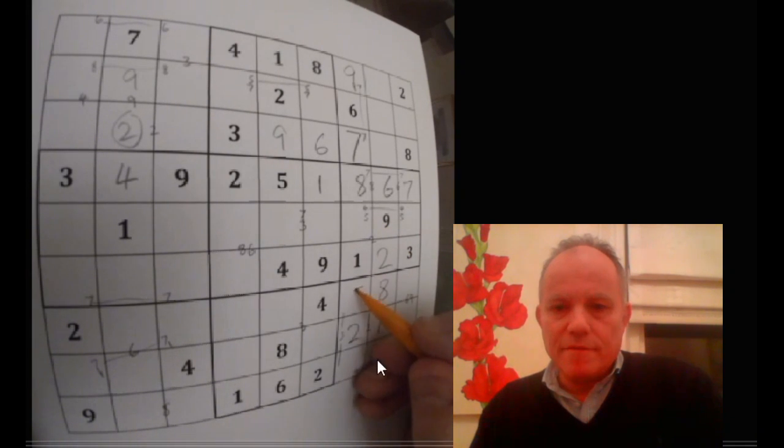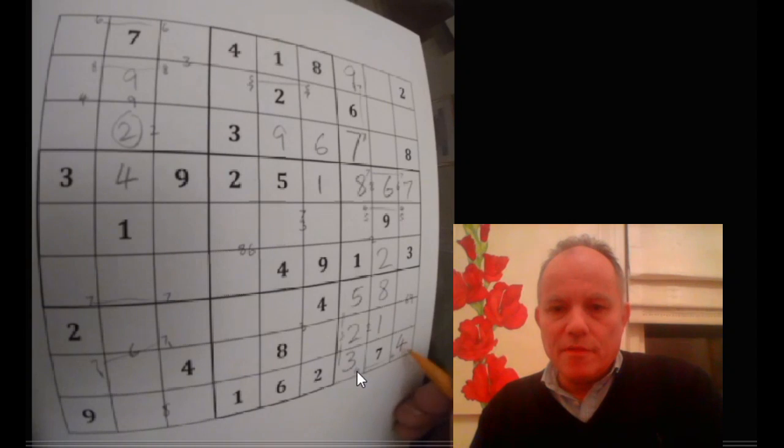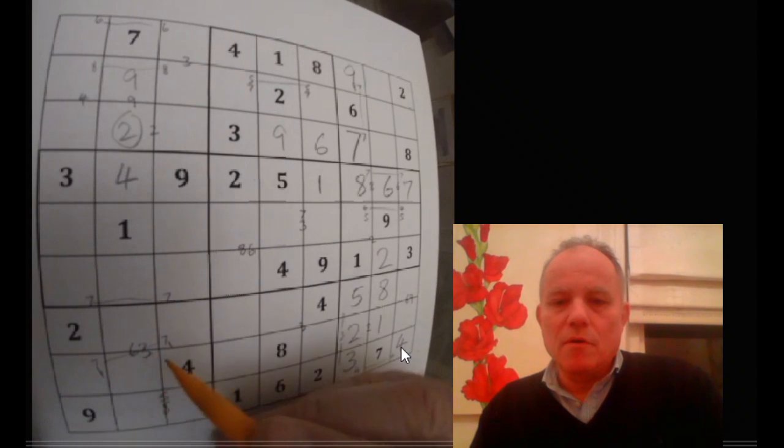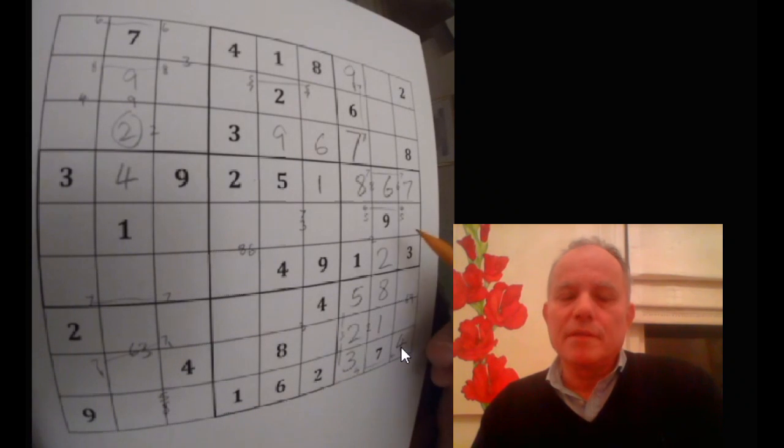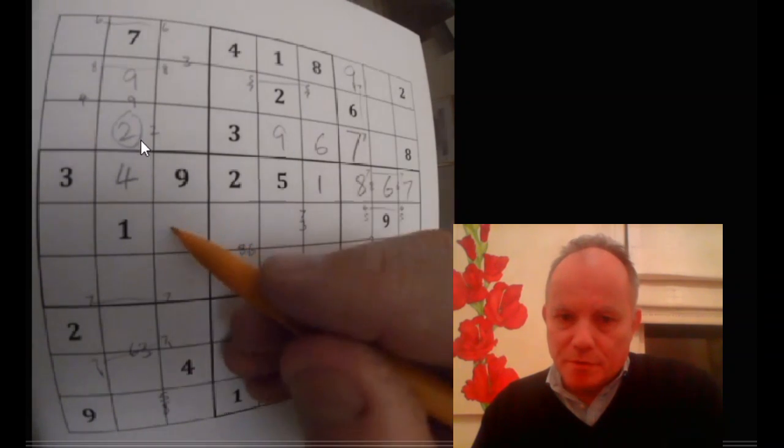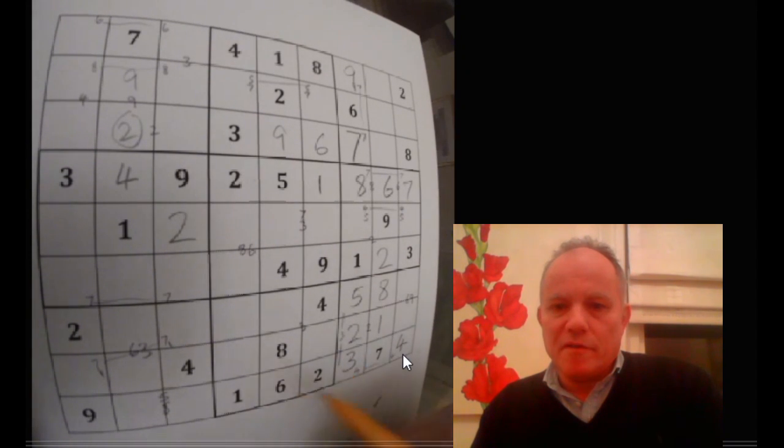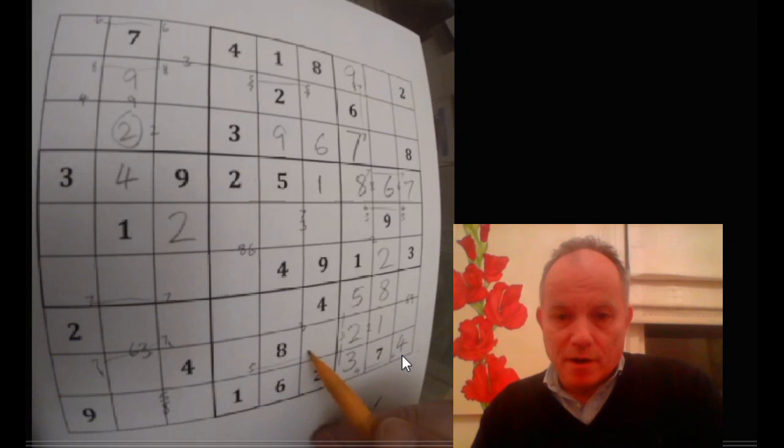Now the first bit of uniqueness comes in. If that's a four-five pair, these bottom two can't be a four-five pair or the grid would be impossible. This is all on the presumption that this two is right. Remember, we haven't proved that wrong. Because that can't be a four-five pair, the three has to be in the bottom row.